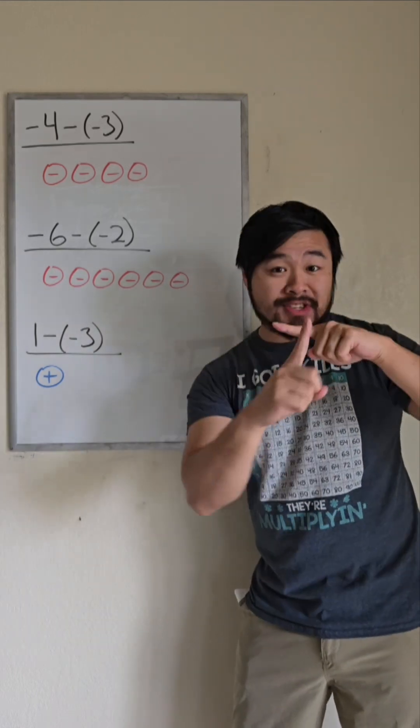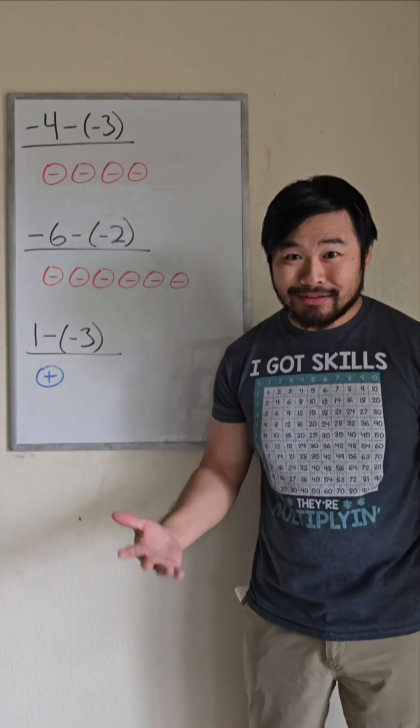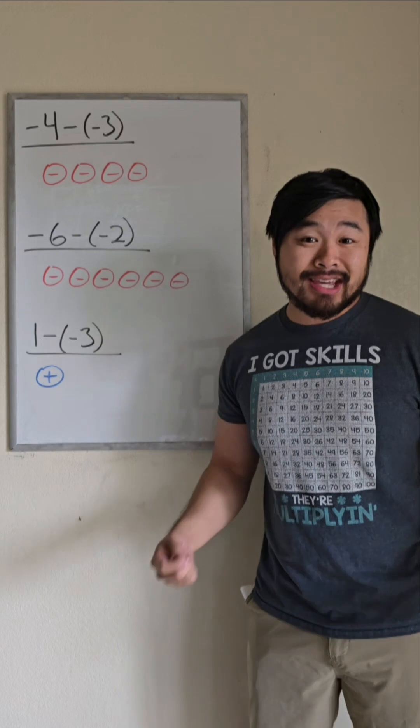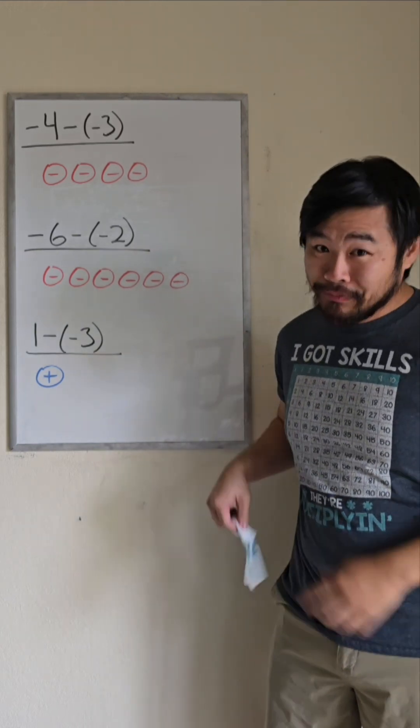We don't have to rely on two negatives to make a positive when subtracting a negative. One way we can think about this is think about subtraction as taking away. For example,